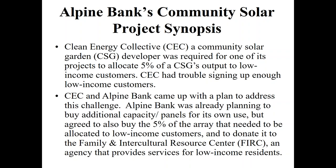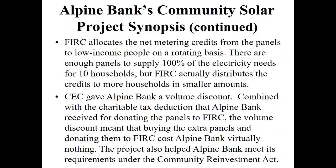Alpine Bank was already planning to buy additional panels to offset their location's energy costs, but also agreed to buy the additional 5% of the array that needed to be allocated for low-income families in the county. In turn, the goal was to donate this asset to the Family and Intercultural Resource Center — locally called FERC — an agency providing services for low-income residents and struggling families. FERC would allocate net metered credits from the panels to low-income residents on a rotating basis, enough to supply approximately 100% of ten family households' electricity needs.